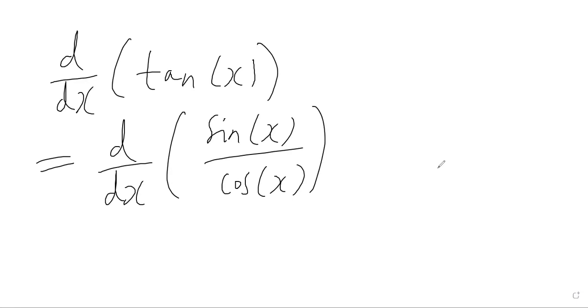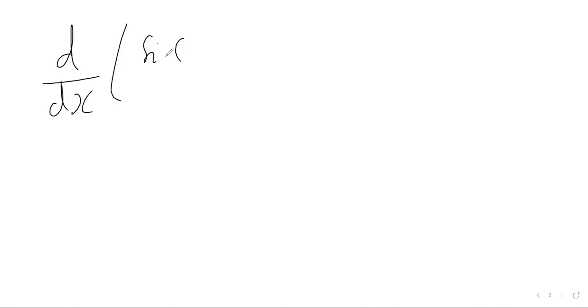When we try to differentiate tan, we're going to use the fact that we know how to differentiate sine and cos from the previous videos. And because we've got a fraction — a function divided by another function — we're going to have to use the quotient rule. So we essentially want to work out the derivative of sine divided by cos, which makes this a quotient rule problem.